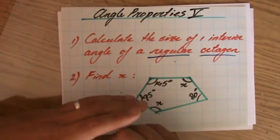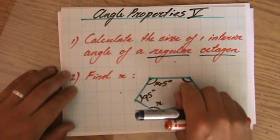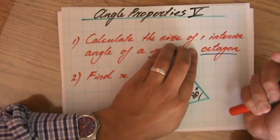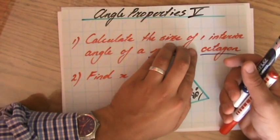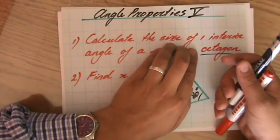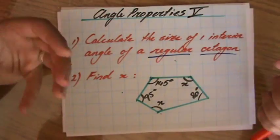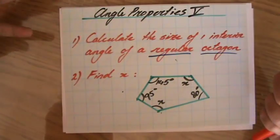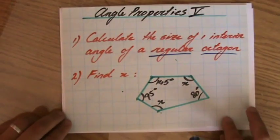And this question you can only answer because it's a regular octagon. If it would just say octagon, then you don't know, then all the angles are probably different. So you can't just divide by 8, but because it's a regular octagon and all angles are the same, you can find the total and then you divide it by 8, the amount of angles.